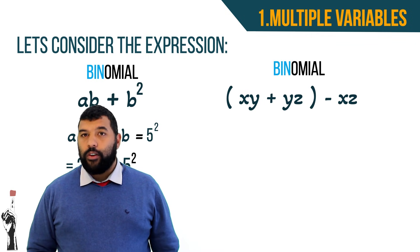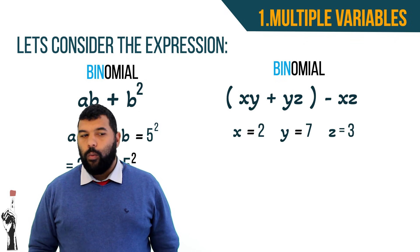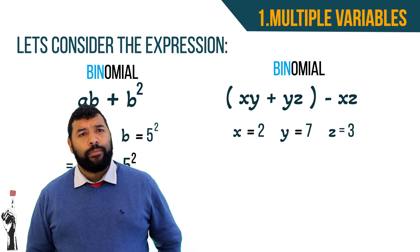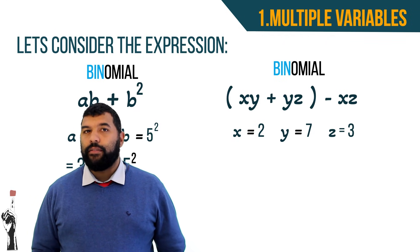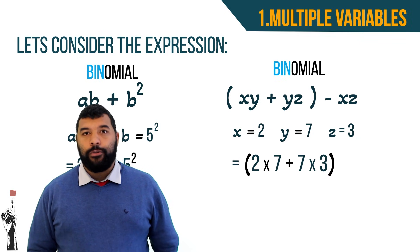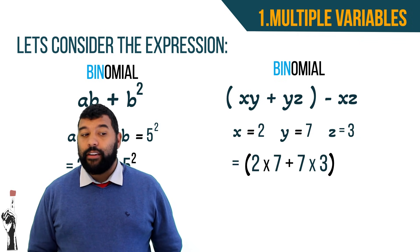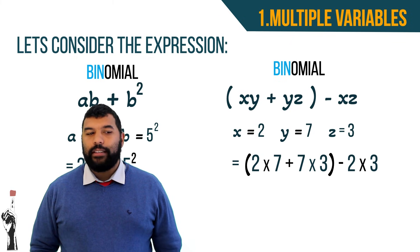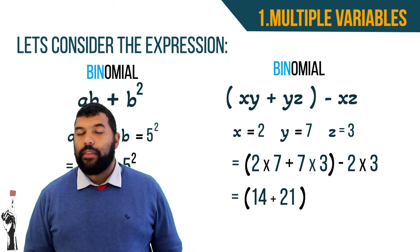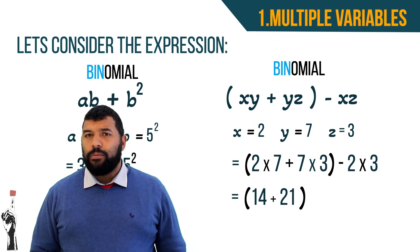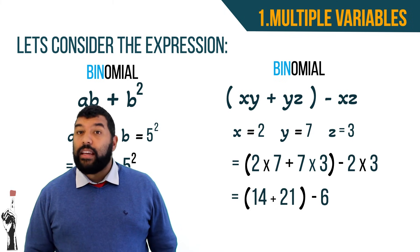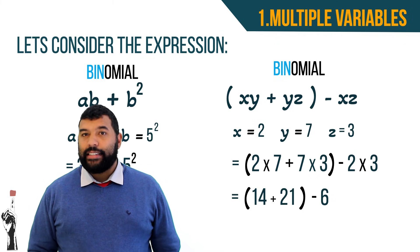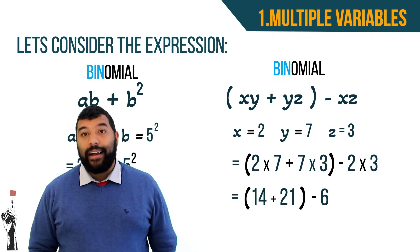We replace the variables: x equals 2, y equals 7, and z equals 3. So xy gives 2 times 7 equals 14, yz gives 7 times 3 equals 21, and xz gives 2 times 3 equals 6. There's a negative sign in front of the xz, so we have 14 plus 21 minus 6. 14 plus 21 is 35, minus 6 gives us 29.